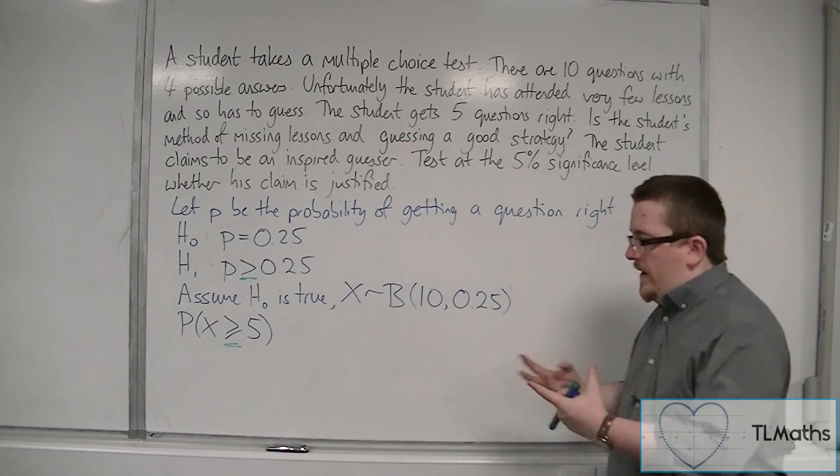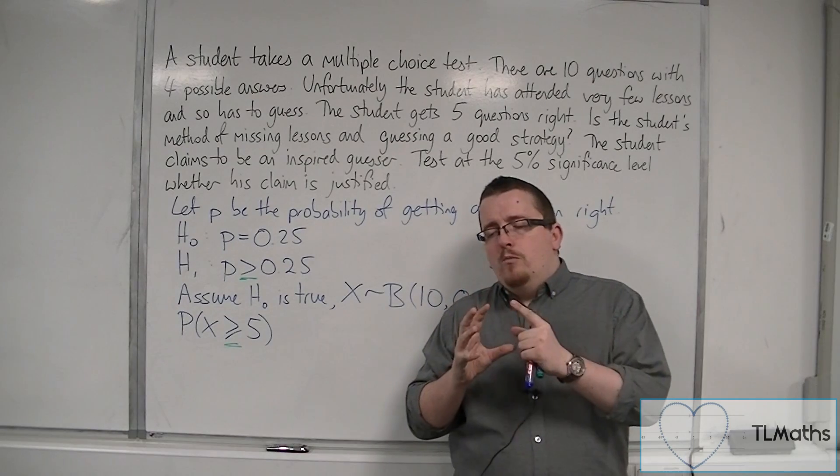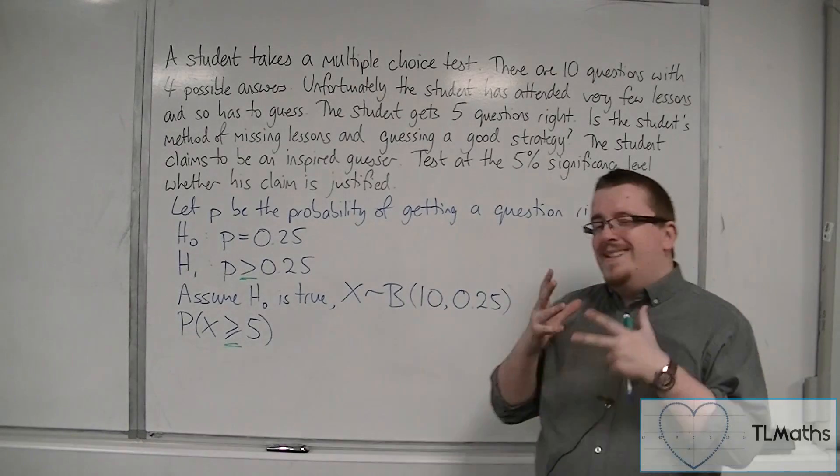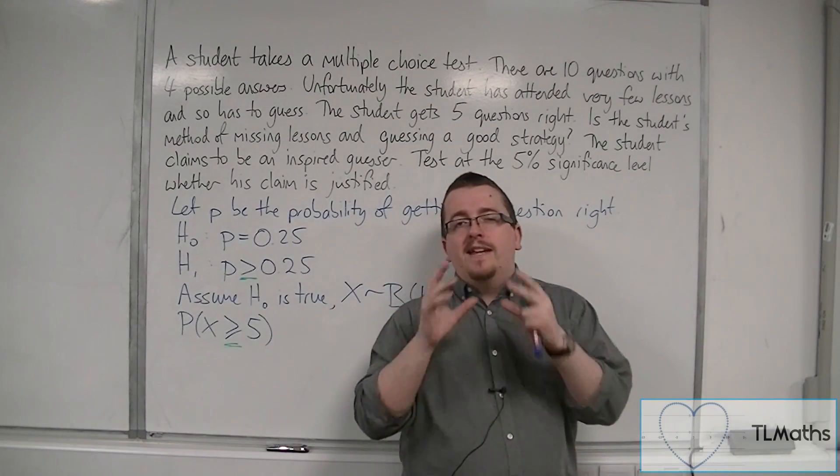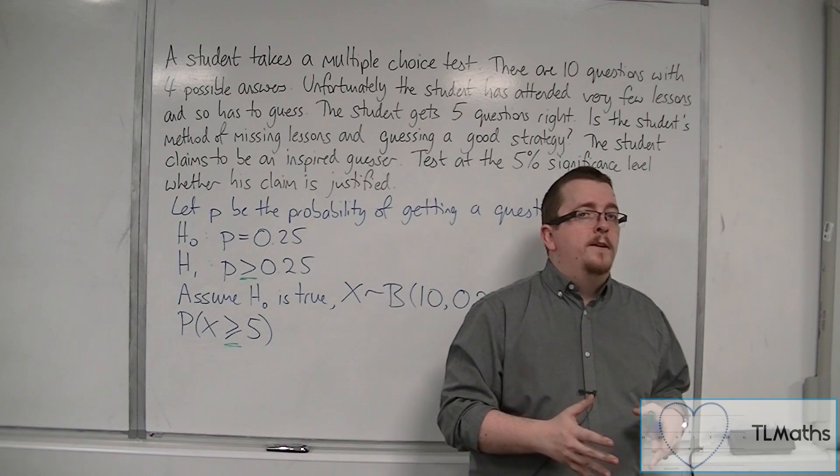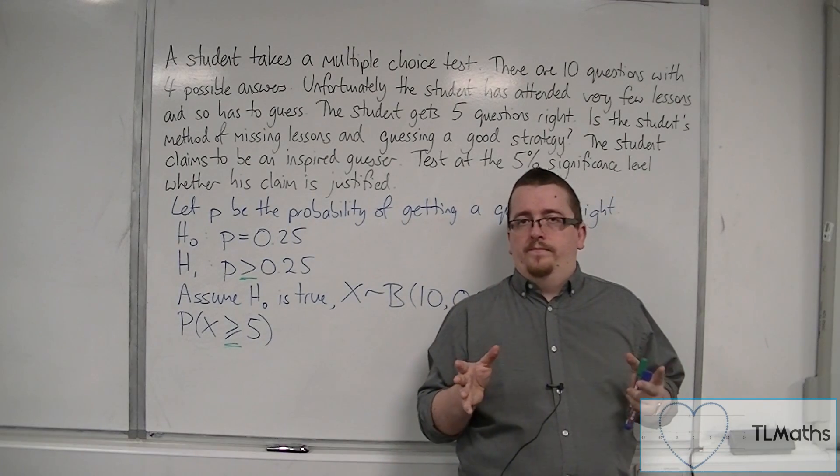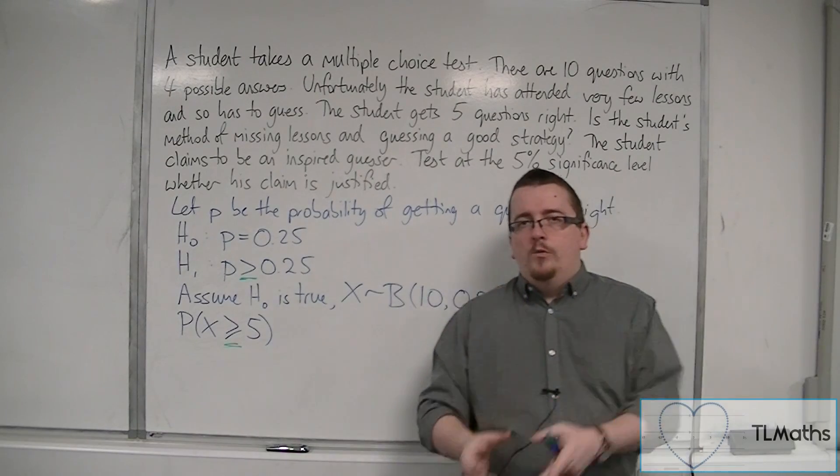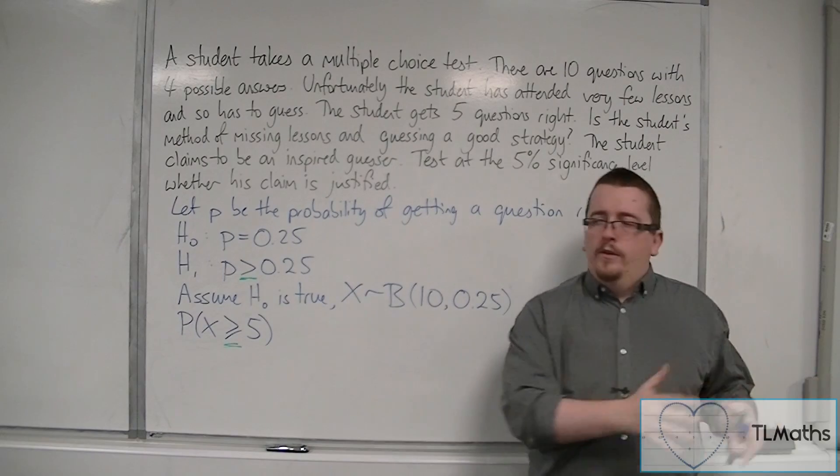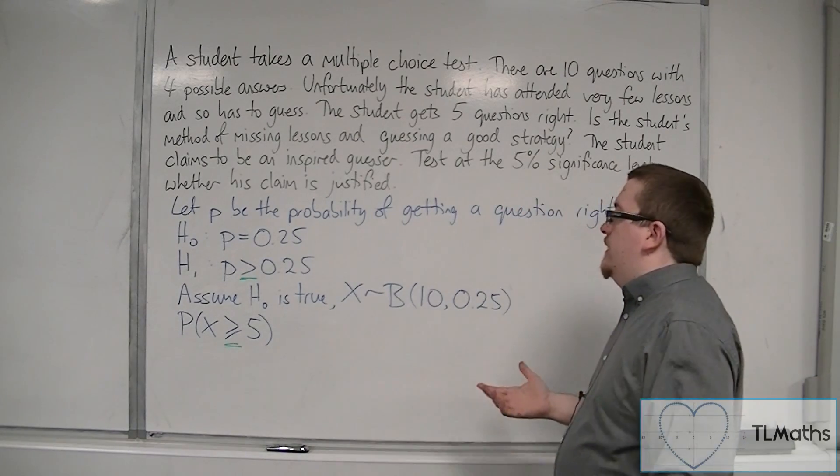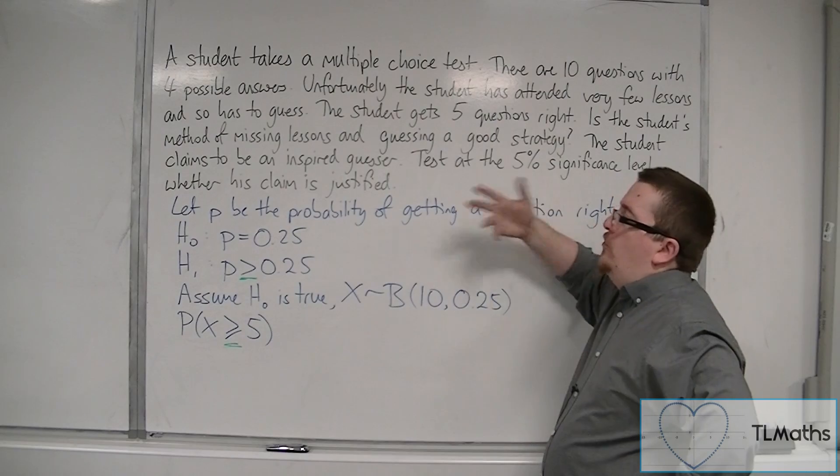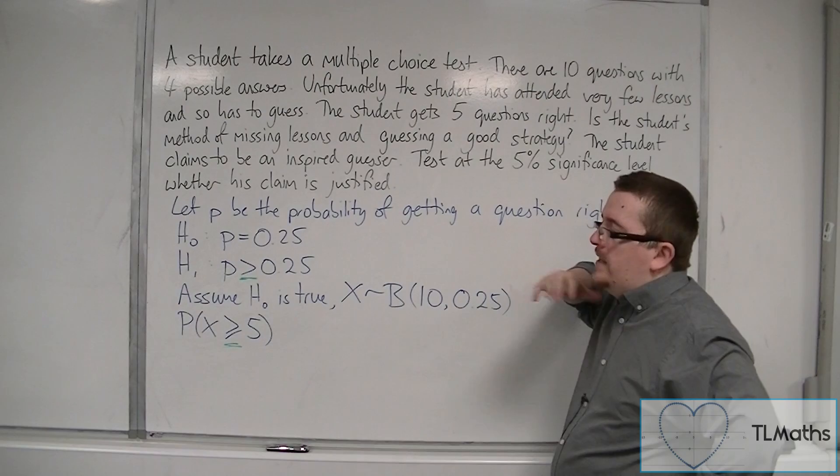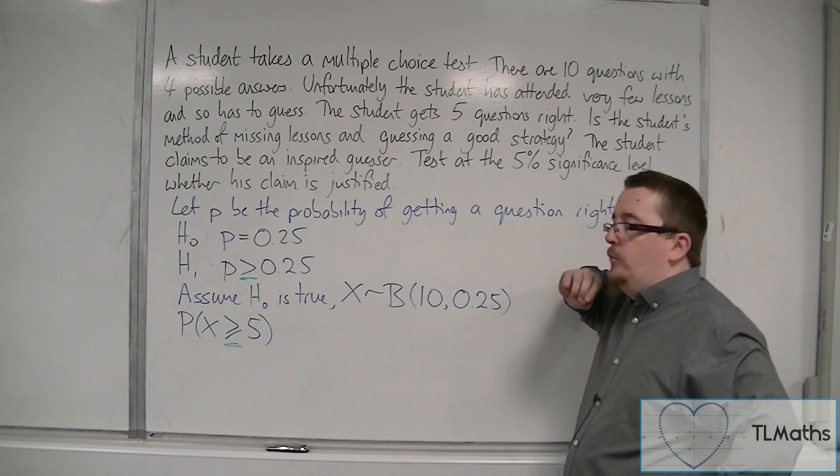The reason why we're not just looking at probability of X being equal to 5 is because we're trying to determine whether getting 5 or more right is significant or not. So we're not just looking at X equals 5, we look at 5 or more. Is 5 or 6 or 7 or 8 or 9 or 10, getting any of those amounts of questions right, is that significant or not? That's what we're testing here.